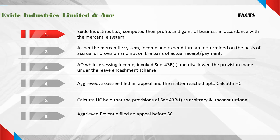Aggrieved, the assessee filed an appeal and the matter reached up to the Calcutta High Court. The Calcutta High Court held the provisions of Section 43B clause (f) as arbitrary and unconstitutional. Aggrieved, the Revenue filed an appeal before the Supreme Court.